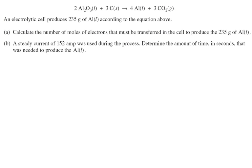Now, we can see this in a problem, and here's a problem from the 2013 AP exam. We're given an equation, and in this equation, the electrolytic cell produces 235 grams of aluminum according to this equation. So we want to calculate the number of moles of electrons that are transferred to make the 235 grams of aluminum. And then, if we had a 152 amp circuit, then how long would that take in seconds to produce this 235 grams of aluminum?